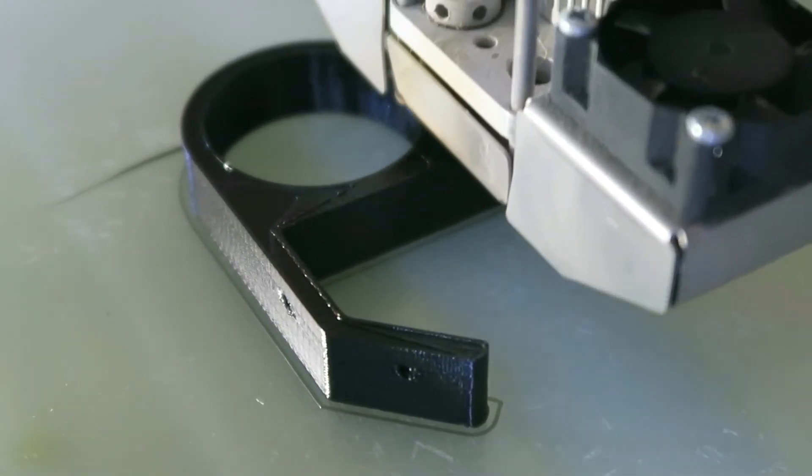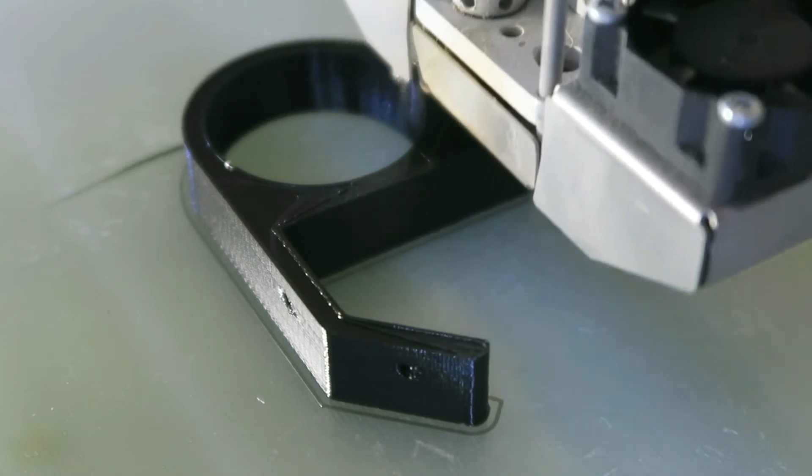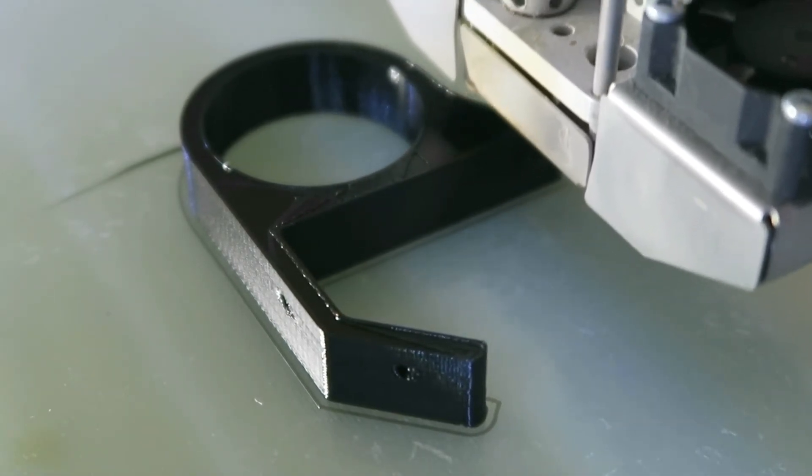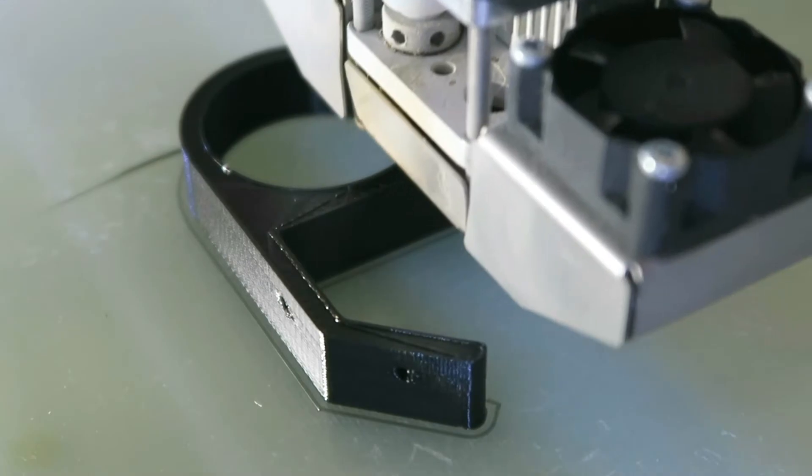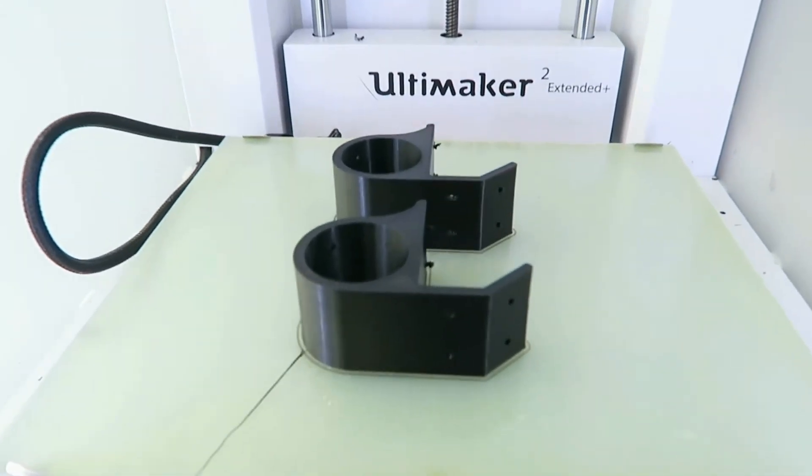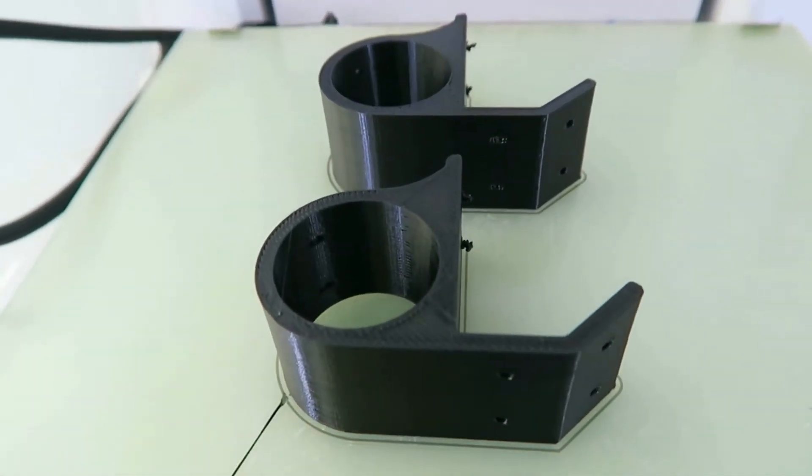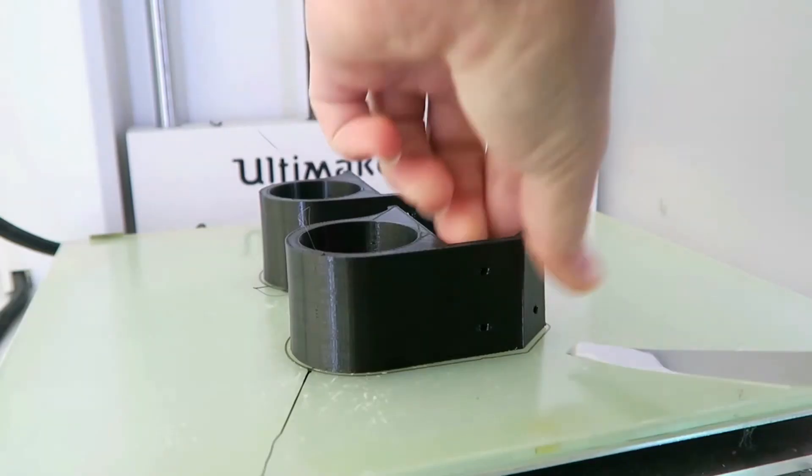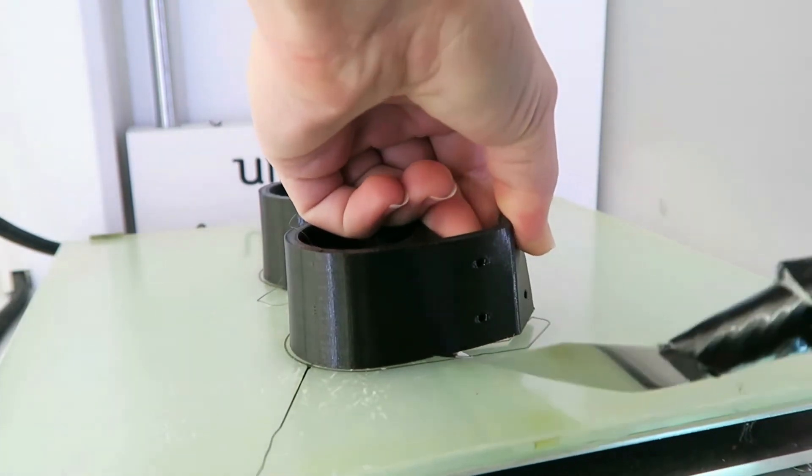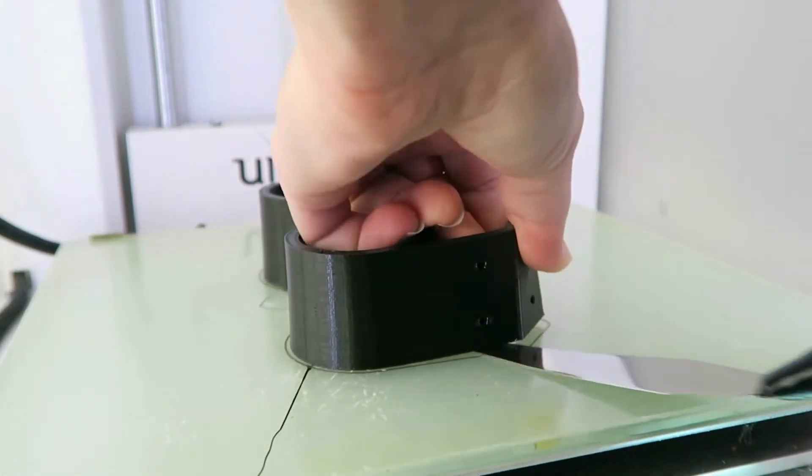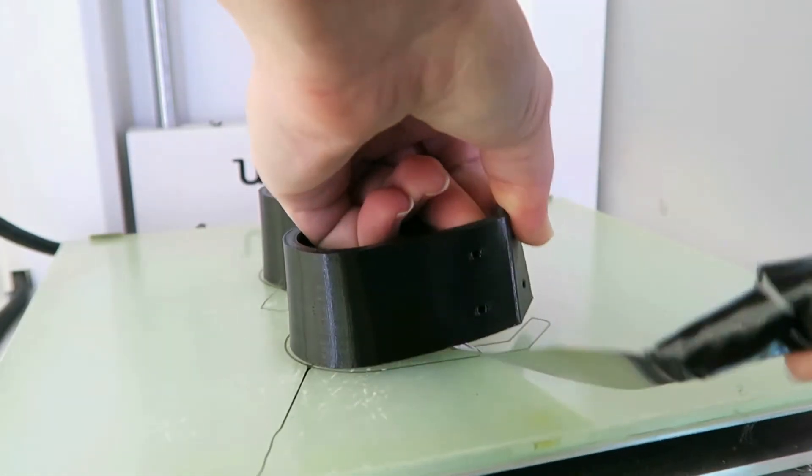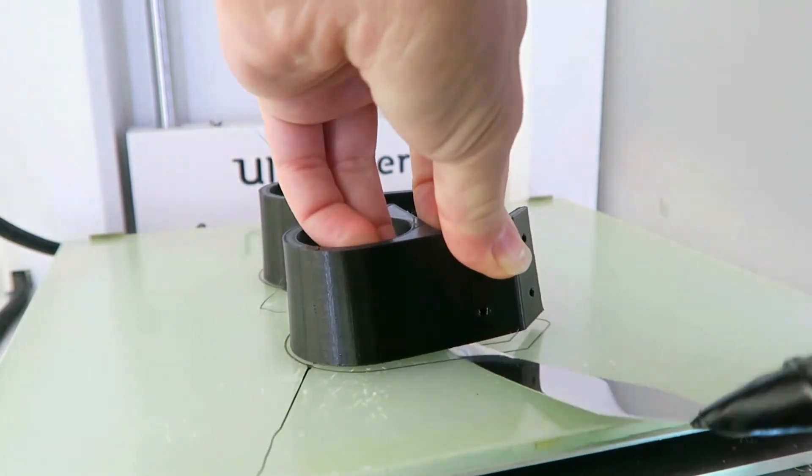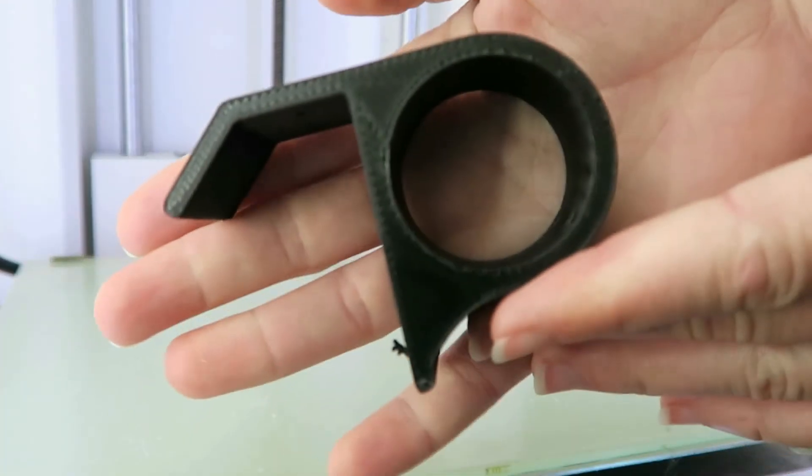My print surface is printbite, which bonds really well with semiflex. Definitely wouldn't want any bed heat turned on. It's already really challenging to get the brackets off the bed, so in retrospect I would maybe decrease that initial layer thickness or move the plate down a tiny bit so that first layer isn't so close to permanently bonded with the printbite. It's a tough balance between getting a smooth first layer and ease of removal.